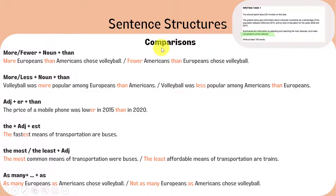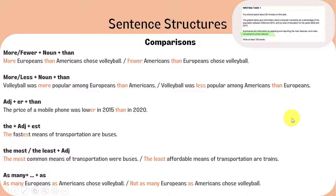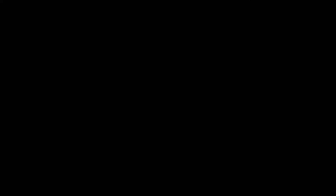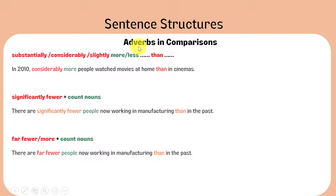Now let's learn about the second basic group of language needed to describe diagrams: comparisons. Learning how to make comparisons in IELTS task 1 writing is important because the instructions tell you to make comparisons where relevant. You also need to use a variety of grammar structures for a higher band score. In IELTS writing, you should be able to write the same thing in different ways. You can pause the video and make a note of these structures — the best way to learn them is to write as many examples as you can. In order to make comparisons more accurate, consider using adverbs to modify the words you use to compare items.